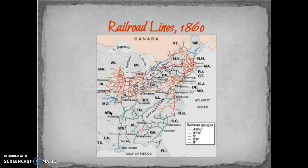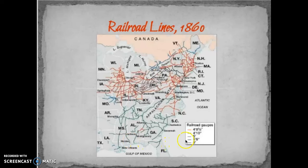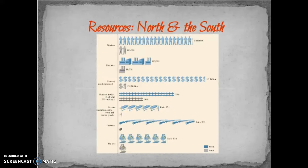In the South, the railroad situation is different for two reasons. First, there is much less track in the South than in the North — partly due to fewer internal improvements and less industrial development. Second, there are many different gauge widths. North Carolina is more in line with the North, but other areas show different gauges — blue, green, or black. When gauges differ, you have to stop and reload onto another train rather than just switching the track, which is a significant disadvantage for the South.